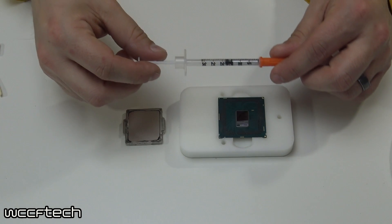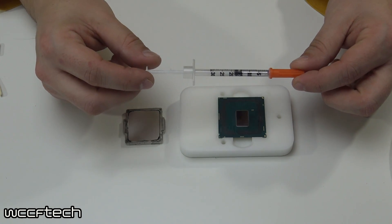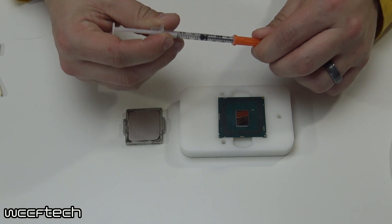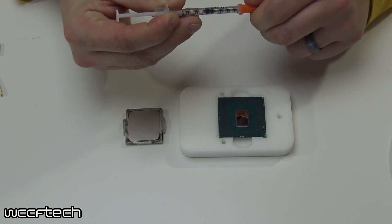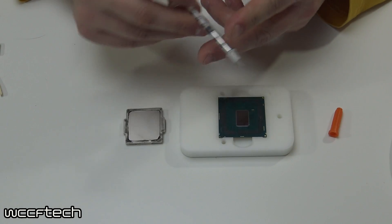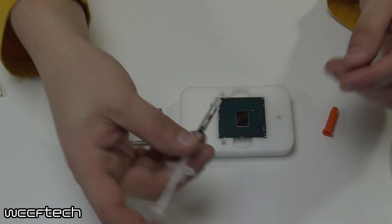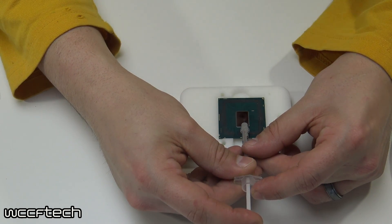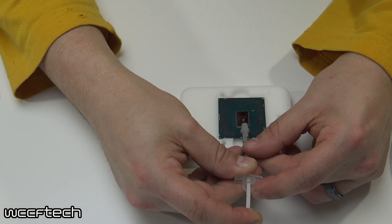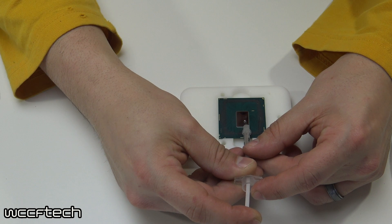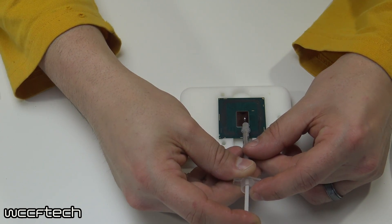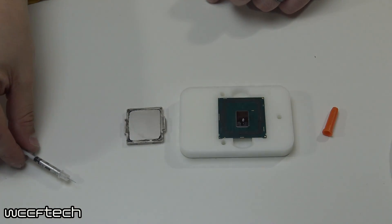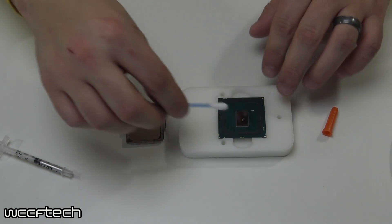You want to go ahead at this point and apply the Cool Laboratory Liquid Pro. Now you can use Ultra, it's a better compound than the Pro, but for me I like the Pro better for application purposes because it uses this little tiny needle tip. Now the catch here is you only need a very small drop, you don't need much at all. That little bead there may actually be more than enough.